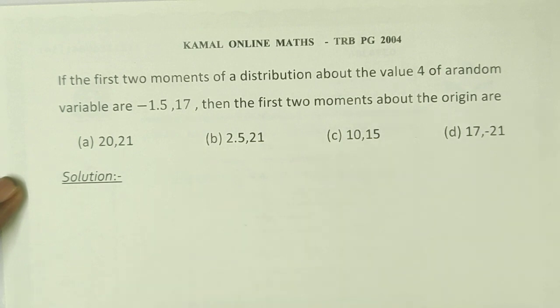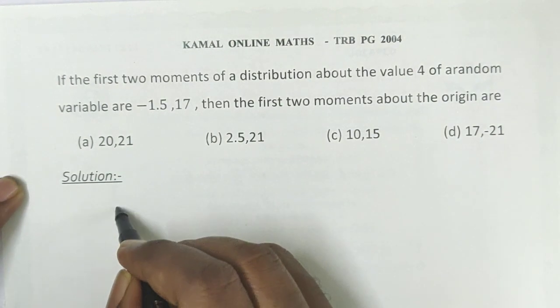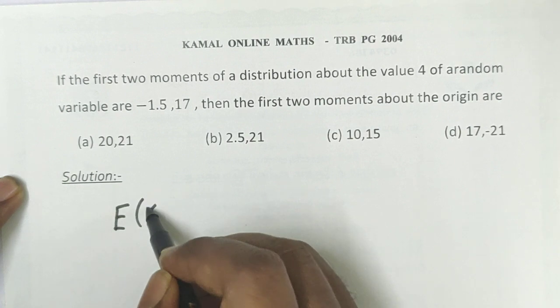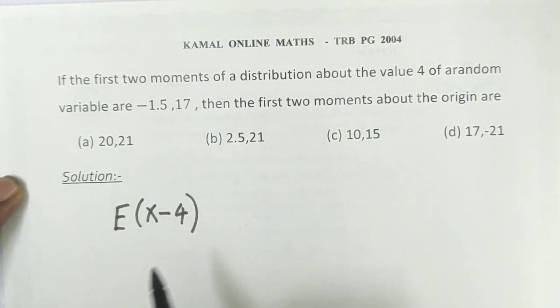So given values, the first two moments of a distribution about the value 4. Given values to be, expectation of x about the value 4 is x minus 4.